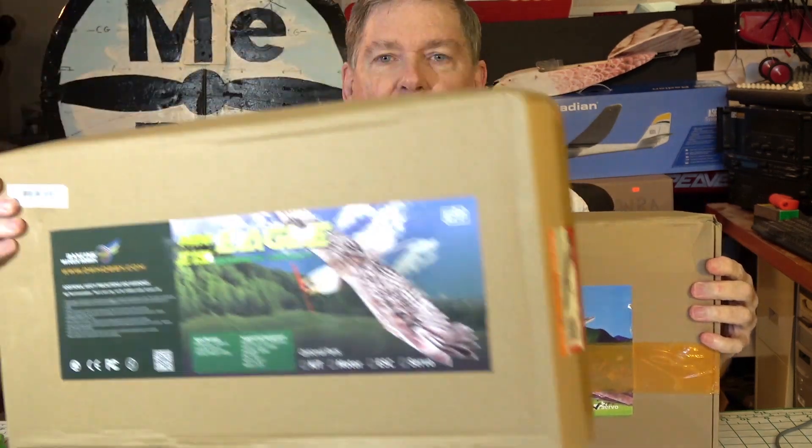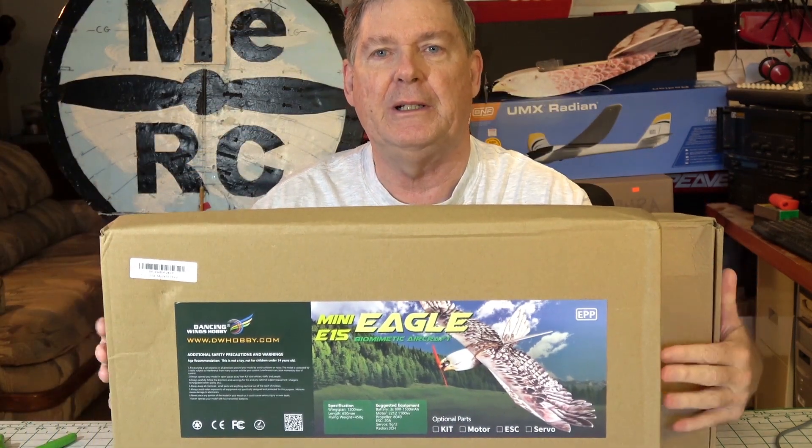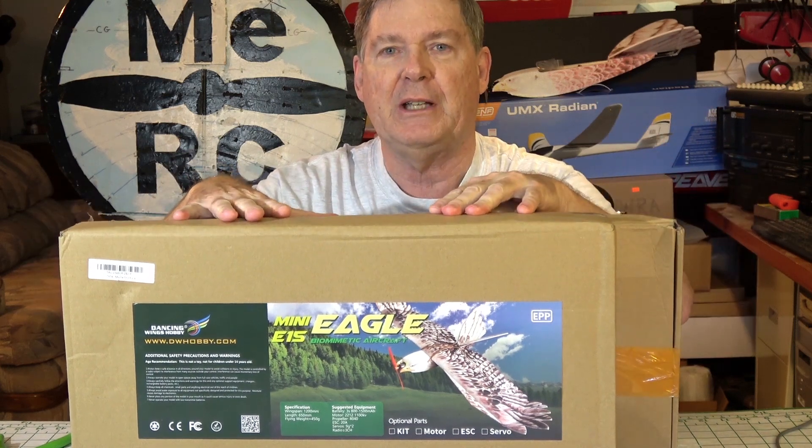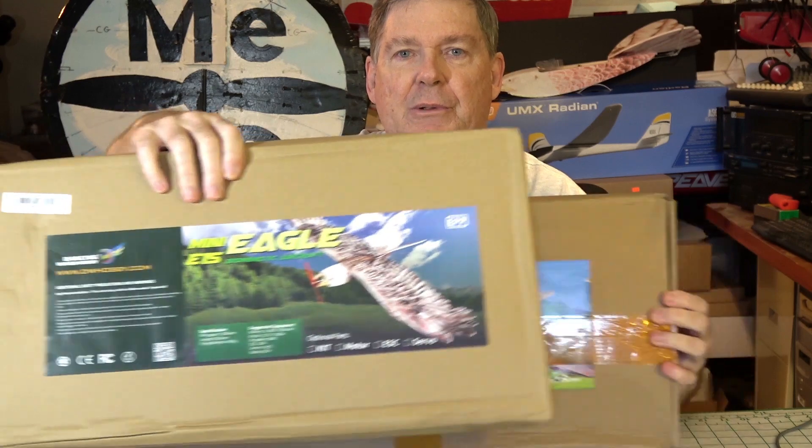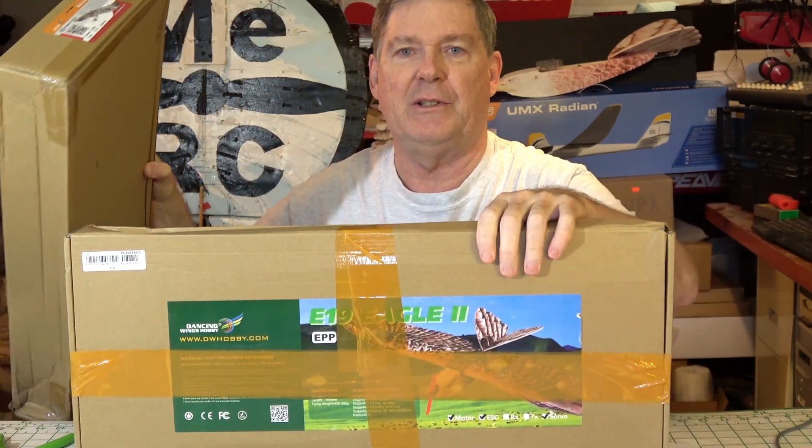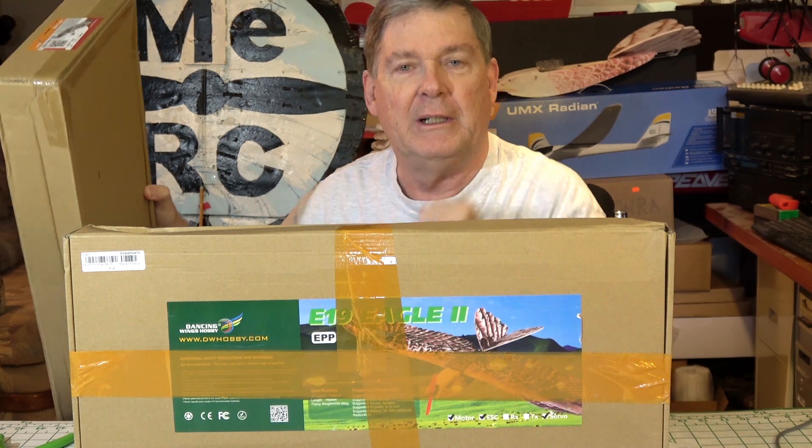This is the box from the smaller mini Eagle and you can see there isn't a lot of difference in the boxes. That kind of surprised me, the boxes were so similar in size. How they crammed that extra size into this box I don't know, but let's get it out of the box and see what's in there.